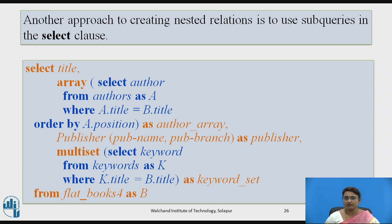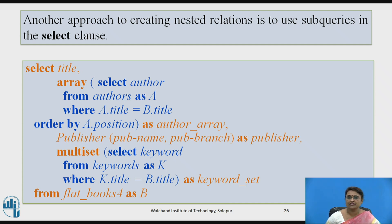Nesting can also be done using subqueries. One approach: a subquery selects the title and converts individual authors into an array ordered by position. Another subquery uses the MULTISET keyword to collect keywords into a multiset. These are the approaches for nesting and unnesting in databases.